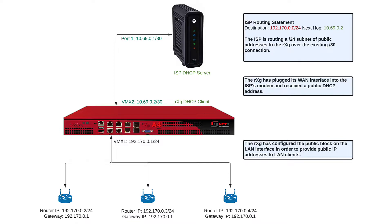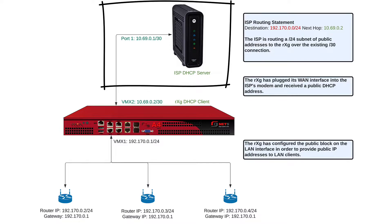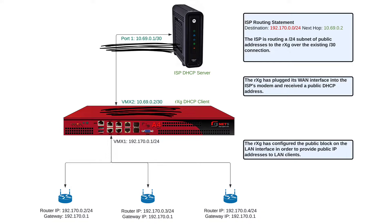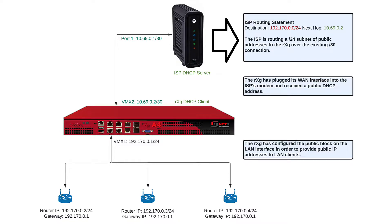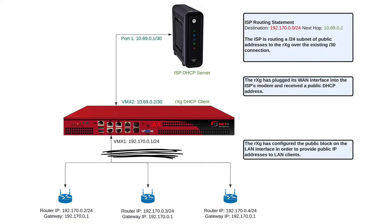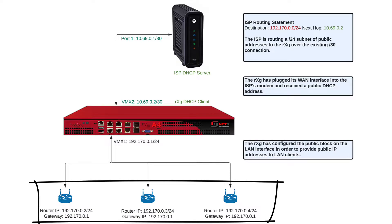In this demonstration, the ISP has provided you with a standard modem that provides DHCP when you plug a device into it. In this scenario, these addresses are private. In addition, the ISP has agreed to provide you with a slash 24 subnet of public IP addresses, but they will route those to you over the existing DHCP connection. The slash 24 subnet can now be configured on the LAN side of the RXG so that the public IP addresses can be provided to the downstream devices.